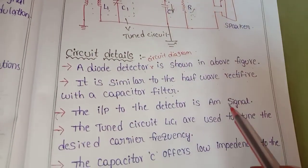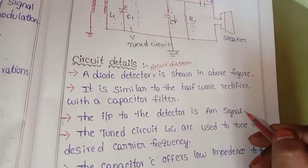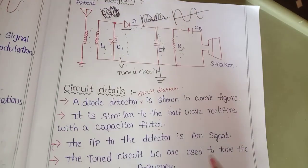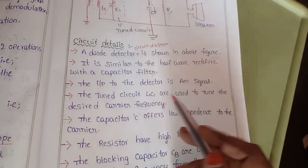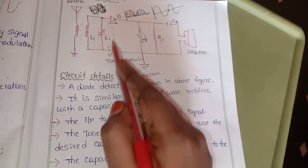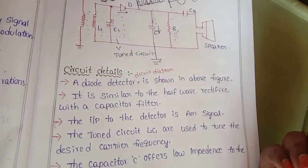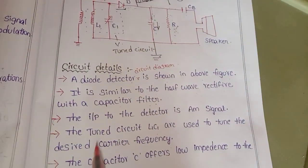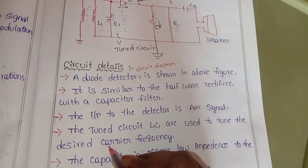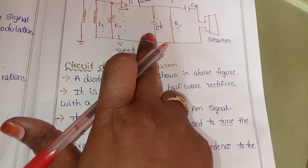The input to the diode detector is the AM signal. The tuned circuit L1C1 is used to tune the desired carrier frequency. This tuned circuit is used to select the desired carrier frequency.